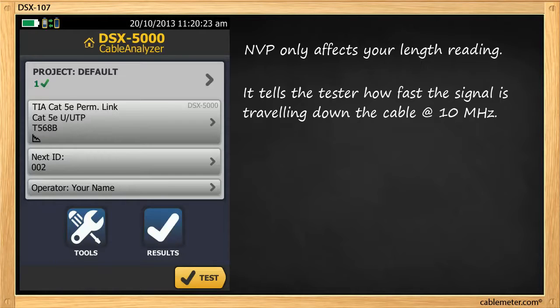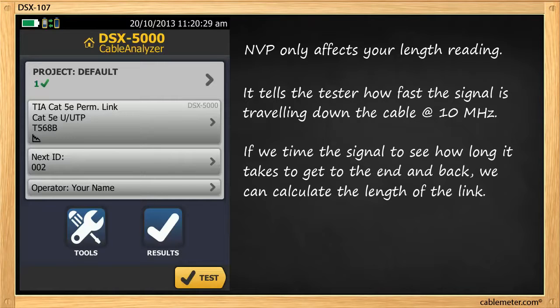The MVP value tells the tester how fast the signal is traveling down your cable at 10 MHz. If we time the signal to see how long it takes to get to the end of the cable and back, we can calculate the length of the cable. Are you ready for some math?